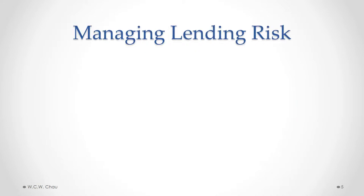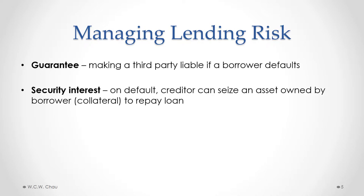To manage the risks of making an unsecured loan, a lender may require one or both of two things: a guarantee and/or a security interest. A guarantee essentially makes a third party liable if the borrower defaults on the loan. A security interest gives a creditor the right, on default, to seize an asset owned by the borrower in order to repay the loan.